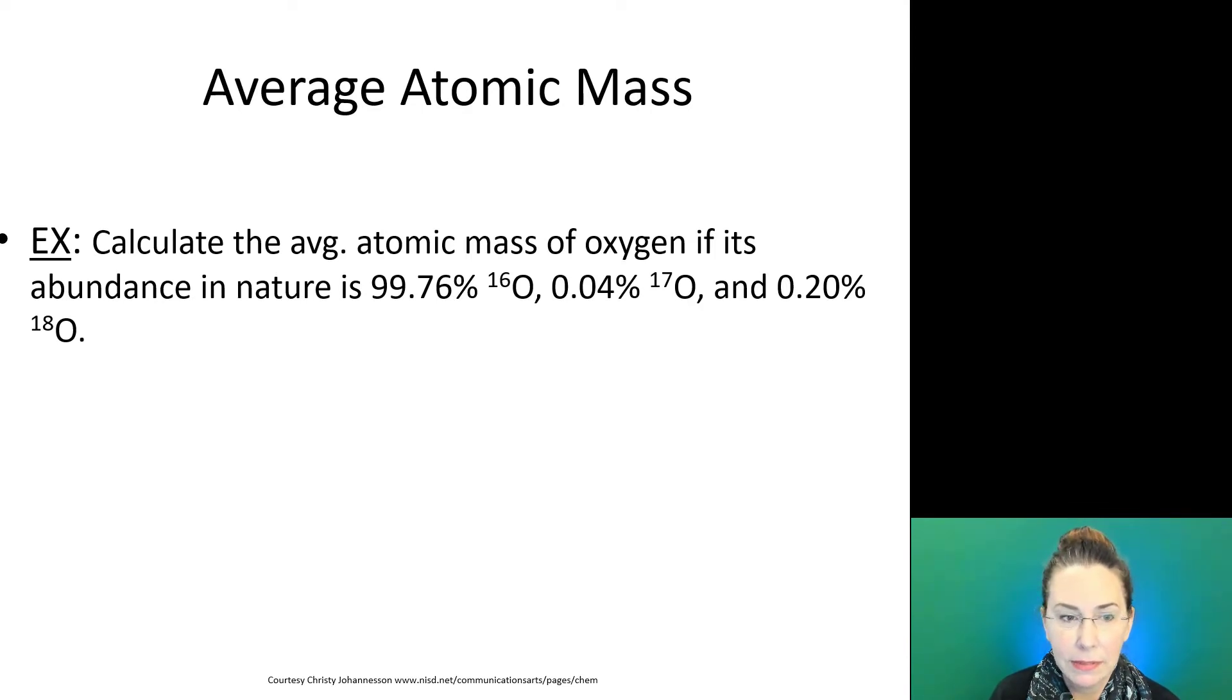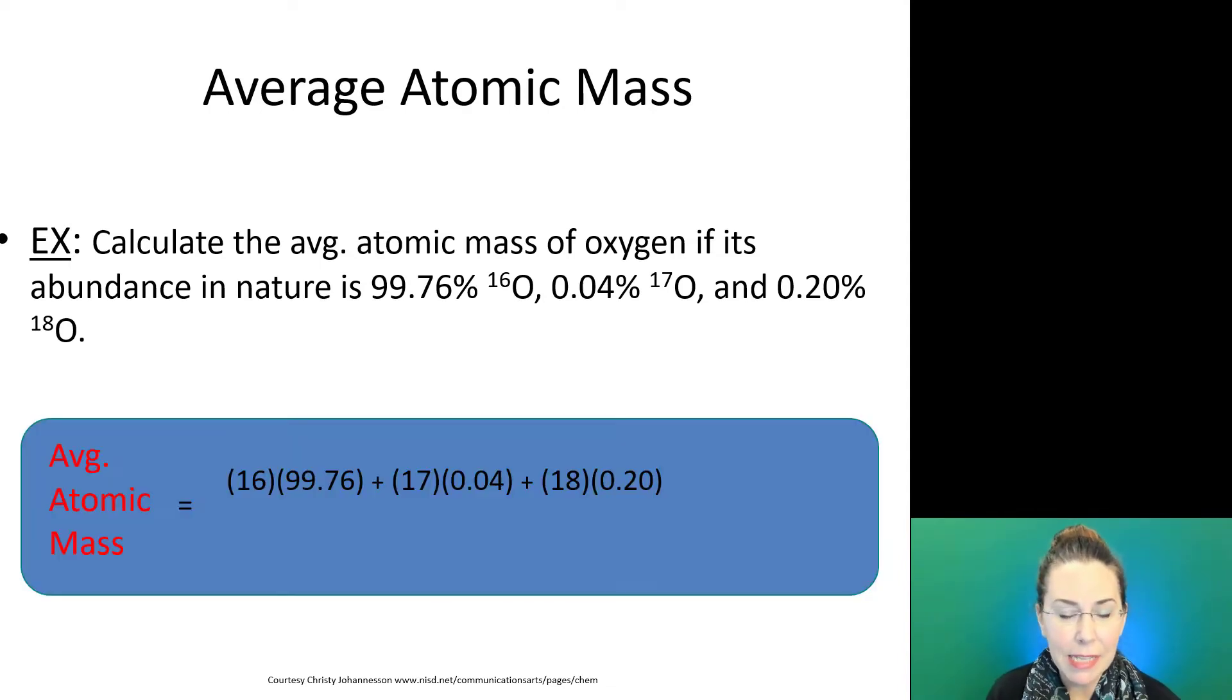For example, let's calculate the average atomic mass of oxygen if its abundance in nature is 99.76% oxygen-16, 0.04% oxygen-17, and 0.20% oxygen-18. I would set this up the following way: I would have my mass of 16, this is my mass number for that isotope, multiplying it by its percent abundance. Here's my next isotope, my isotope of oxygen-17 multiplied by its percent abundance, and my isotope of oxygen-18 multiplied by its given percent abundance.